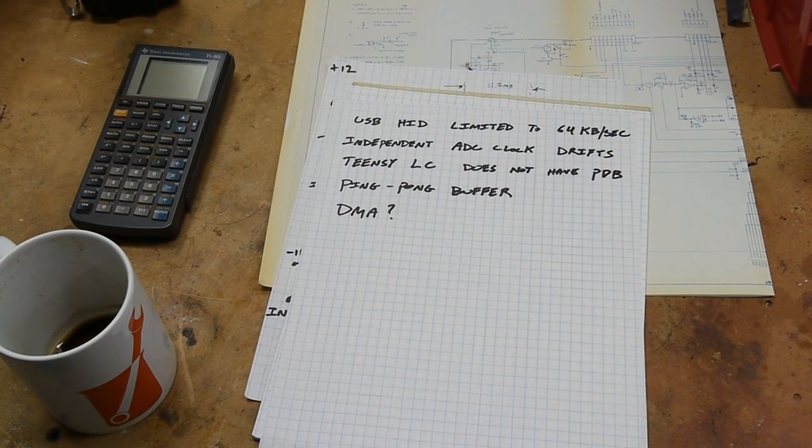By playing with interrupt priorities and writing the code as efficiently as I could, I actually got it to be very consistent. It's performing as well as it possibly could—it's not dropping samples, so I thought that was a bit of a win.